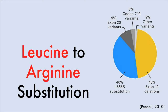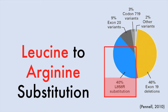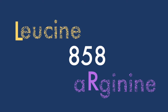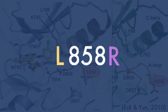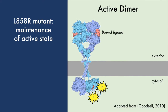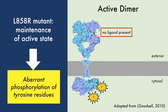Mutations in the EGFR gene that affect its tyrosine kinase domain are common. 40% are L858R point mutations, where the leucine-858 residue is replaced by an arginine in the tyrosine kinase domain activation loop. This mutation destabilizes the inactive form of the enzyme. The receptor is maintained in its active form, where continued autophosphorylation leads to carcinogenesis.